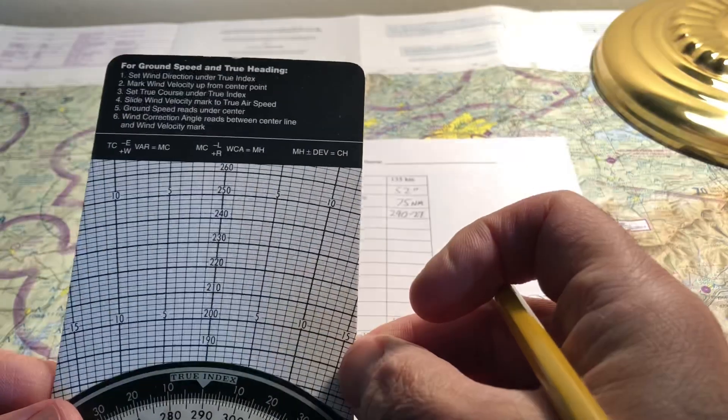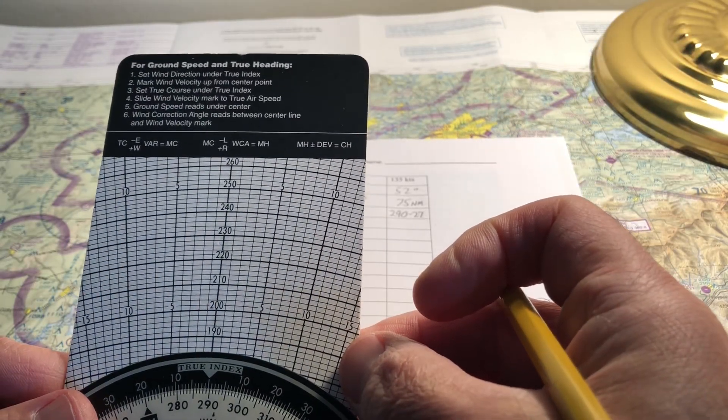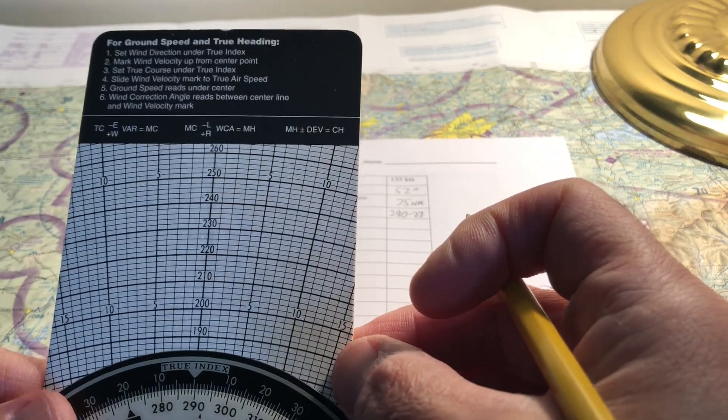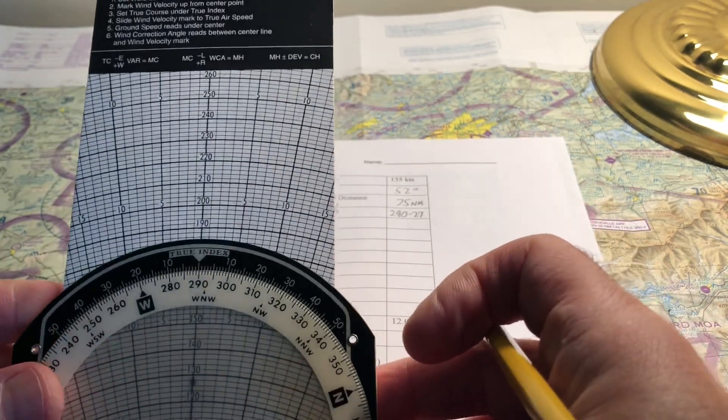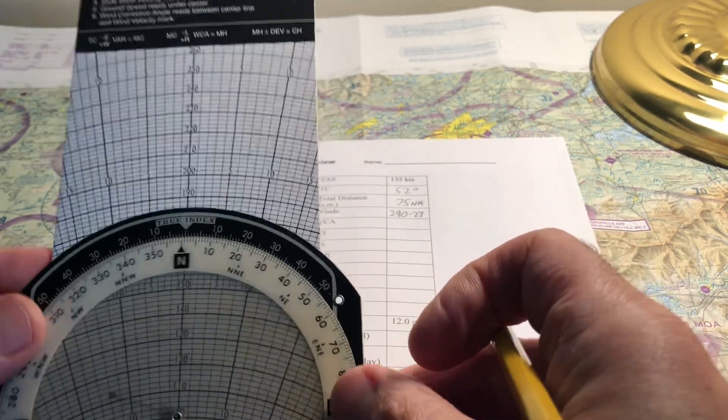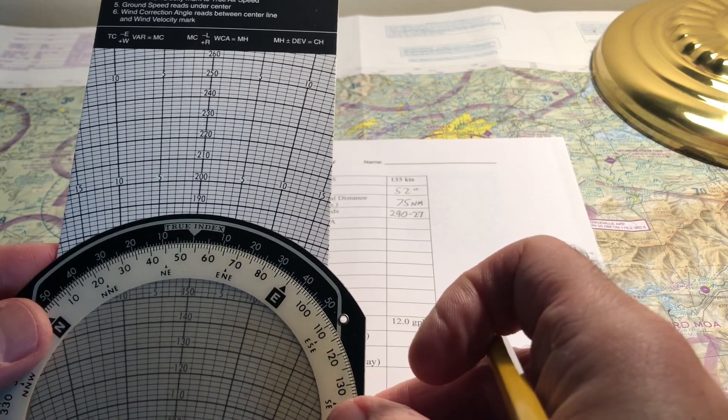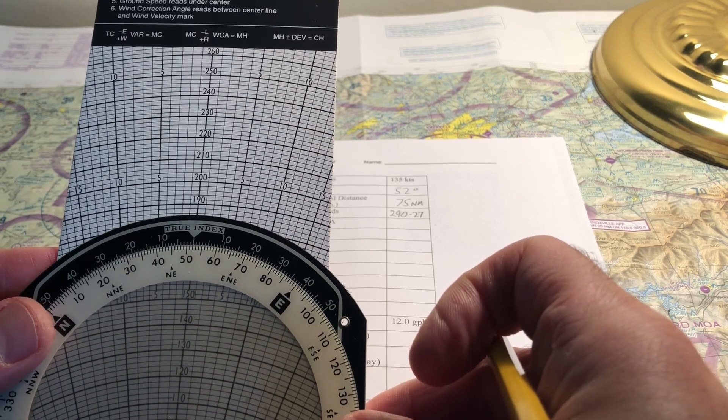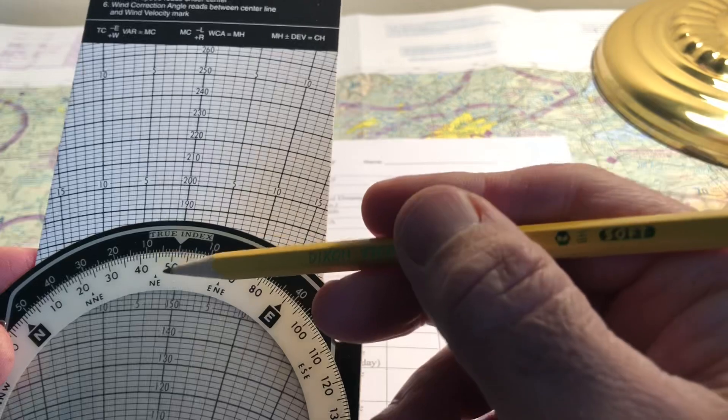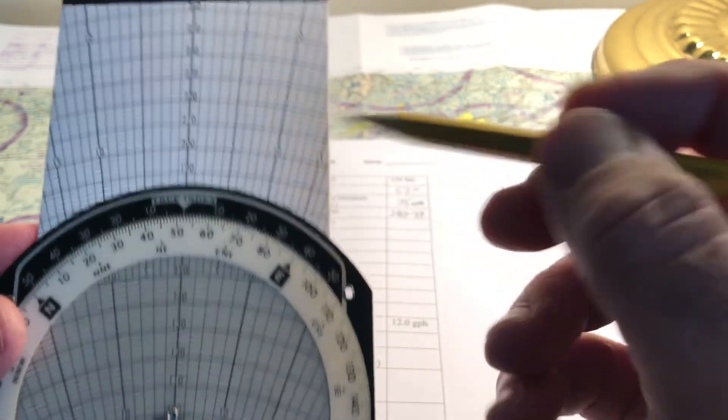Okay, number three, set the true course under the true index. Well, we determined that the true course was 052. So I'm going to rotate the computer to 052. So 052 is right under the true index again.